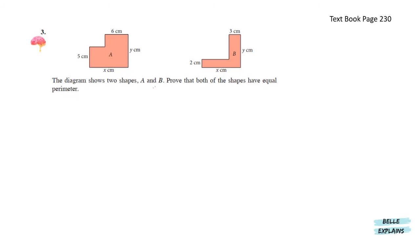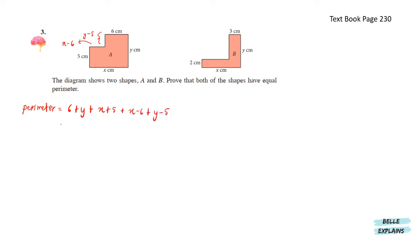The diagram shows two shapes, A and B. Prove that both of the shapes have equal perimeter. Let's start with shape A. This unknown part over here is Y minus 5, and this part over here is X minus 6. The perimeter equals to 6 plus Y plus X plus 5 plus (X minus 6) plus (Y minus 5). The perimeter we get here will be 2Y plus 2X centimeters. We cannot further simplify from this, so we'll leave it for now.